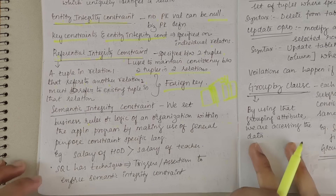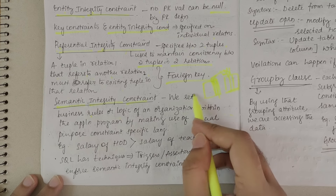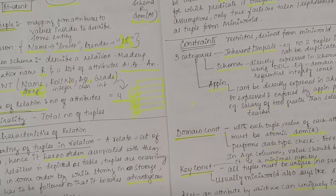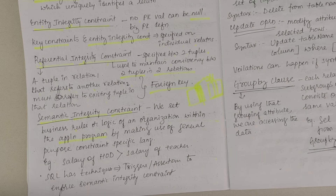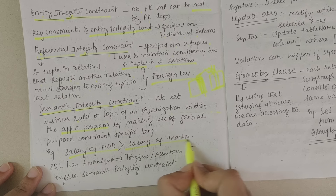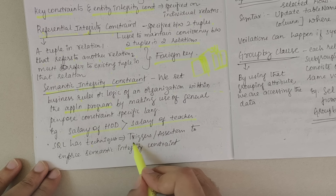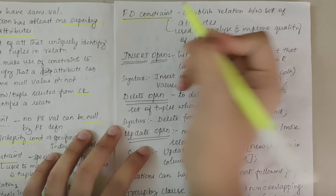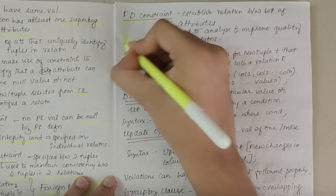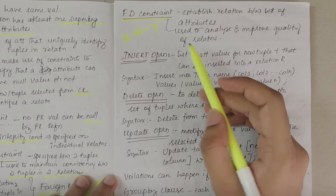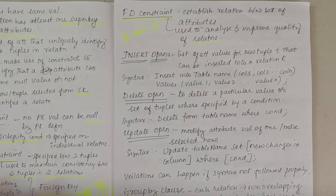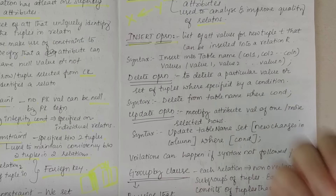Semantic integrity constraint involves setting business rules or logic of an organization within the application program — for example, salary of HOD should be greater than salary of teacher. SQL uses triggers or assertions to enforce semantic integrity constraints. Functional dependency constraint establishes a relation between a set of attributes — we have seen this in the fourth module. This constraint is used to analyze and improve the quality of relations.